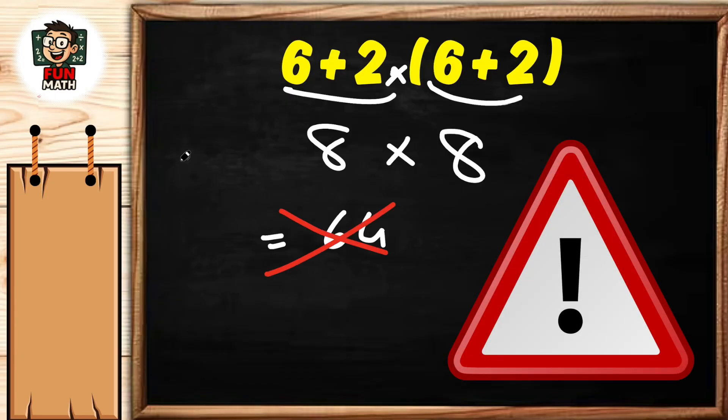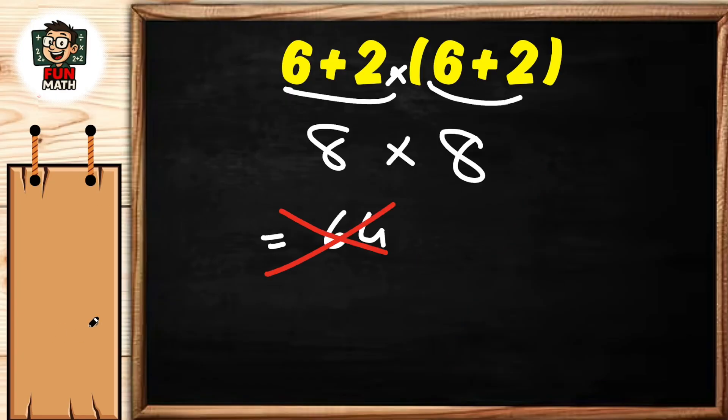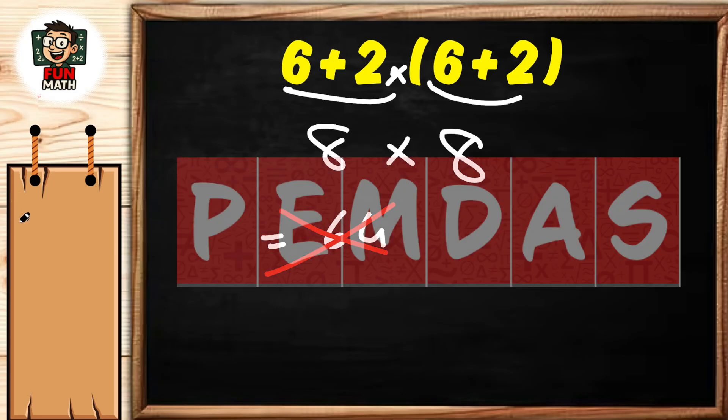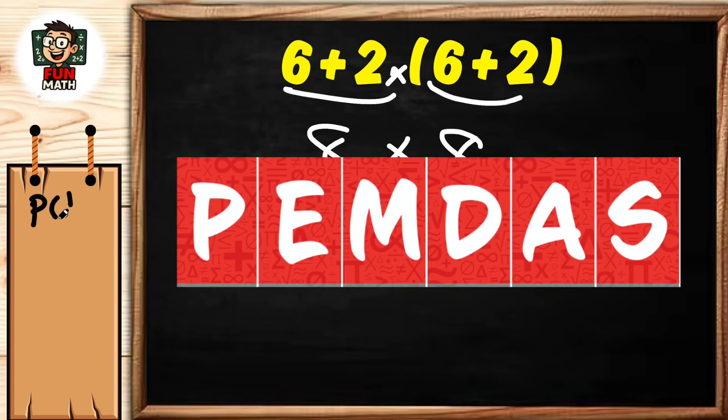To avoid errors here, we must pay attention to the rules of order of operations. PEMDAS: P stands for parentheses, E stands for exponent, M stands for multiplication, D stands for division.